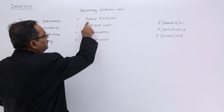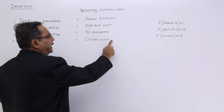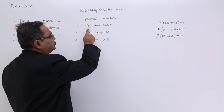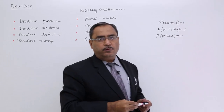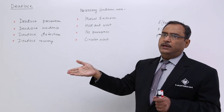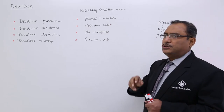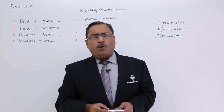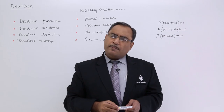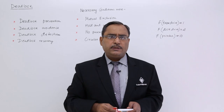Here we are going to discuss deadlock prevention in this session. We know there are four necessary conditions for the occurrence of deadlock. Circular wait is the direct condition and the other three are known as indirect conditions: mutual exclusion, hold and wait, no preemption. If you want their definitions or basic meaning, you can watch our previous videos. Now, mutual exclusion — how to solve it? Not all resources are non-shareable; some resources can be made shareable, and that will not cause any problem.